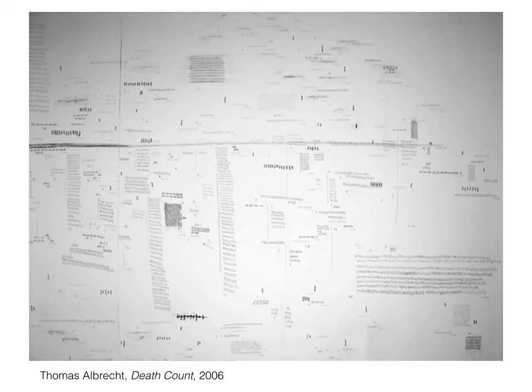Thomas Albrecht is a performance artist who mined the daily news to keep track of deaths in the year 2006. As the country was in the midst of a war in Iraq and Afghanistan, Albrecht flattens the deaths of soldiers, famous people, Afghani and Iraqi citizens into a drawing. The deaths become formal choices that are imbued with meaning. Without contextual information, we are left wondering what the stories are for each death.